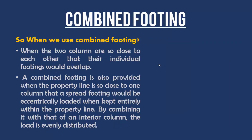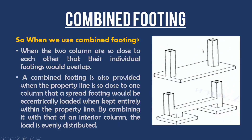This type of strip footing supports the load coming from masonry or concrete wall and transfers it to the soil beneath it. Combined footing is used when two columns are so close to each other that their individual footings will overlap. It is also provided when the property line is so close to one column that a separate footing would be eccentrically loaded when kept entirely within the property line; by combining it with that of an interior column, the load is evenly distributed.